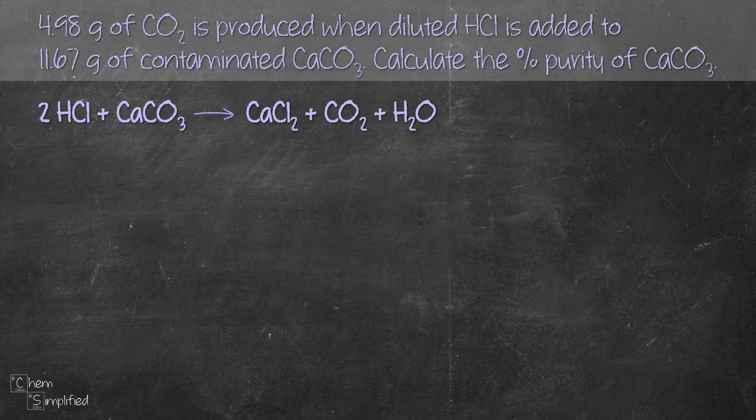Let's apply it on a problem. We have 4.98 grams of CO2 produced when HCl is added to 11.67 grams of contaminated CaCO3. That means that 11.67 grams is the mass of impure sample. So we're asked to find the percent purity of CaCO3. The balanced equation is also provided.